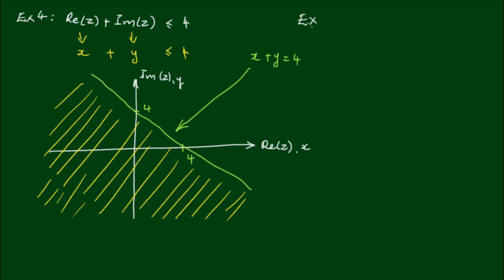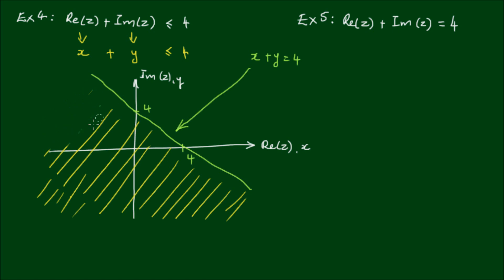Example 5: if the condition is that the real part of z plus the imaginary part of z is exactly equal to 4, then the locus is purely the green line. The locus can only lie on the line x plus y equals 4.